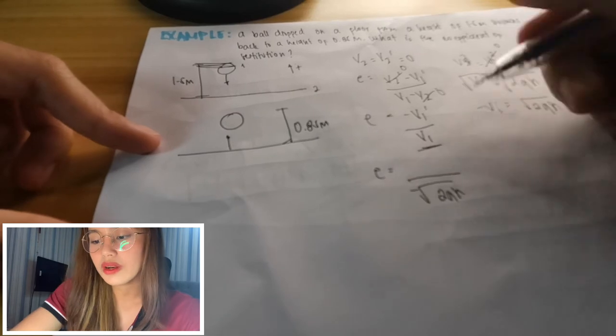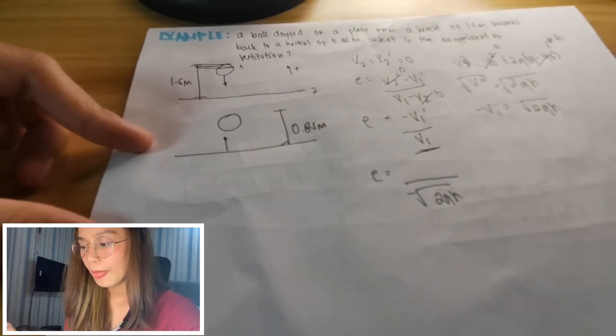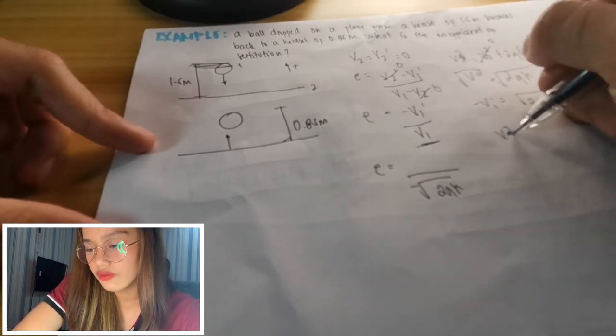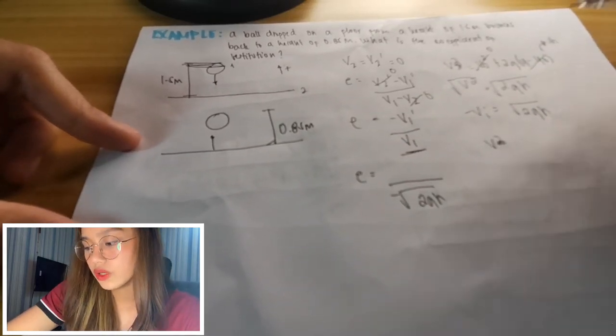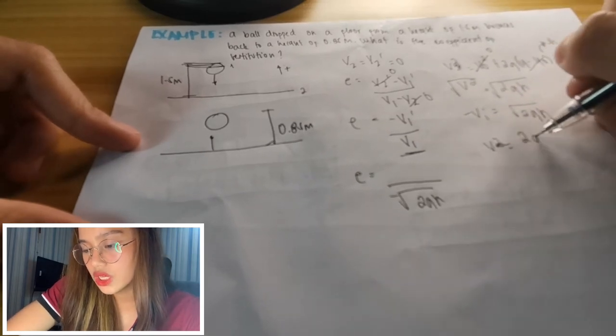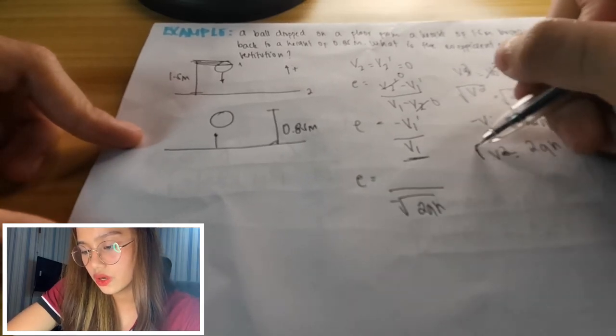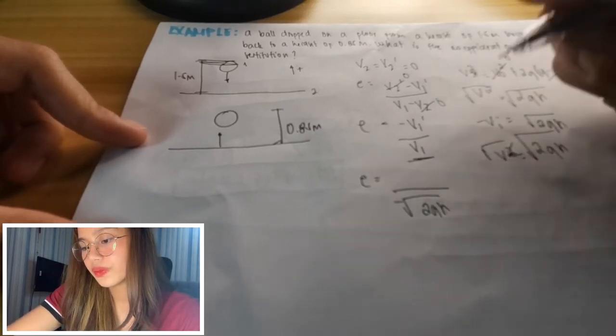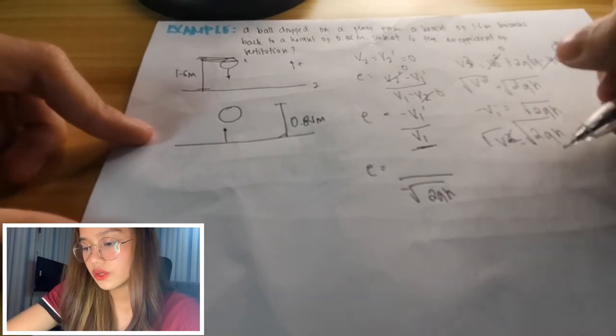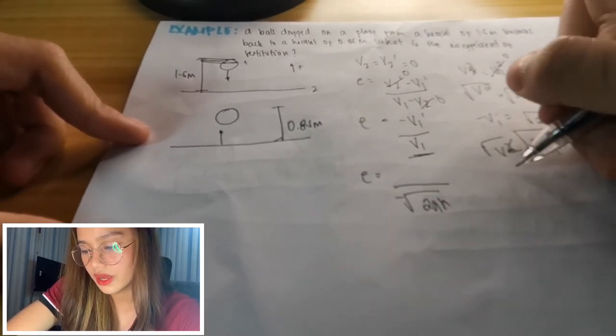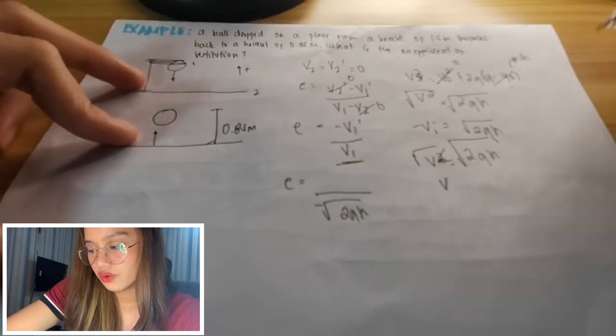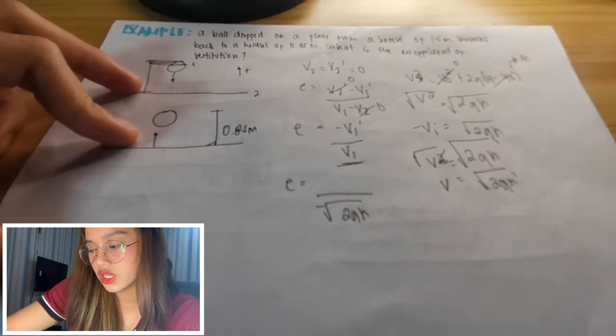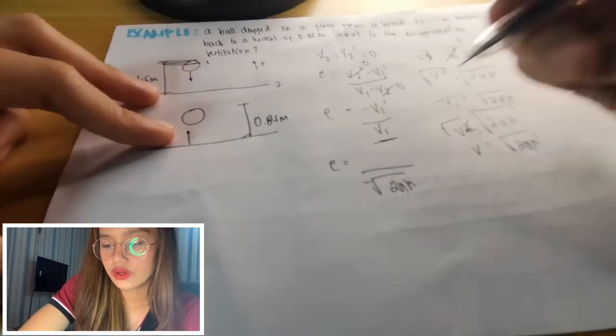So for this one, to get negative v₁ or v₁ prime. So let's repeat that. Is equal to 2gh. So square root again. So the square cancels. So v is now equal to square root of 2gh prime. So this is it guys.